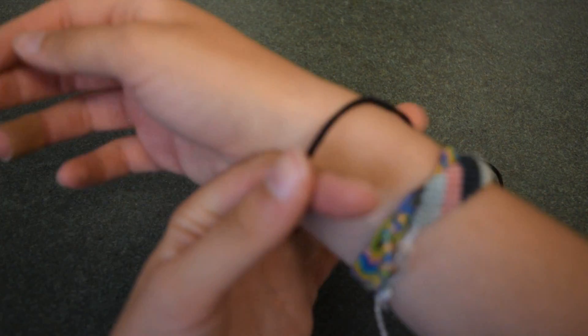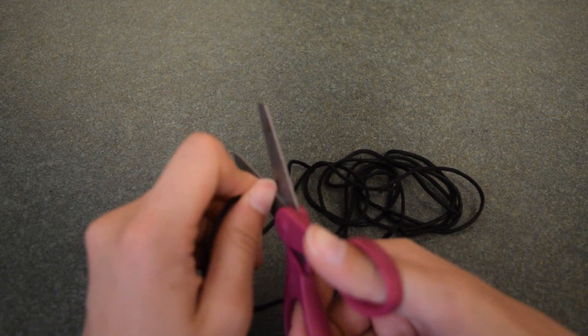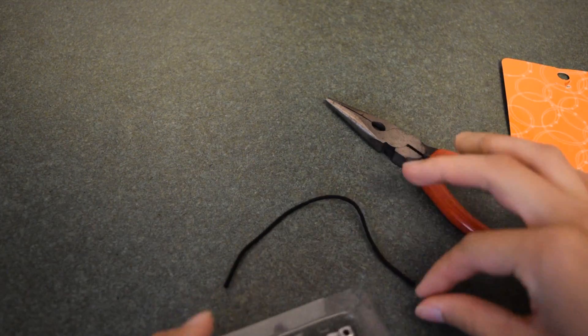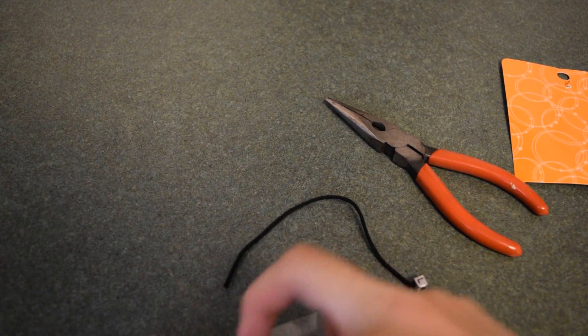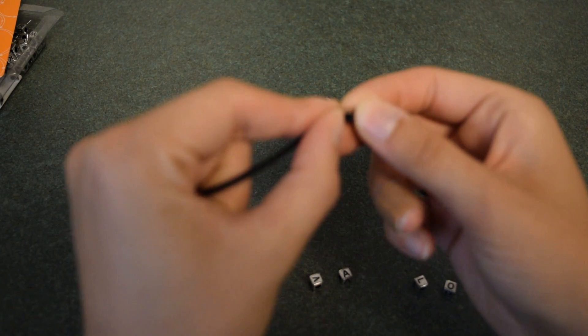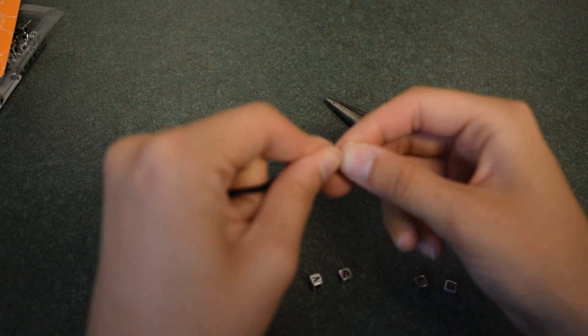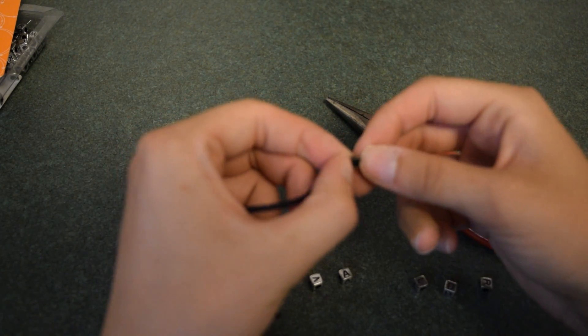I measured the cotton cord around my wrist and cut it to the desired length. Next, I found the letters I needed for my bracelet. Taking one of the crimp connectors, I secured it to the end of my bracelet so the beads would not fall off when I threaded them. I secured the clasp to the jump ring and the crimp connector as well.